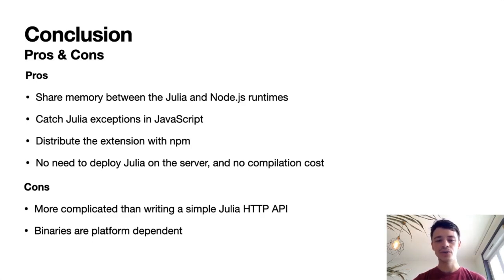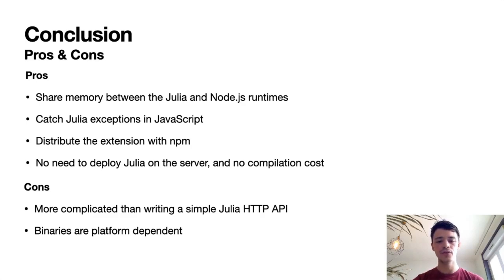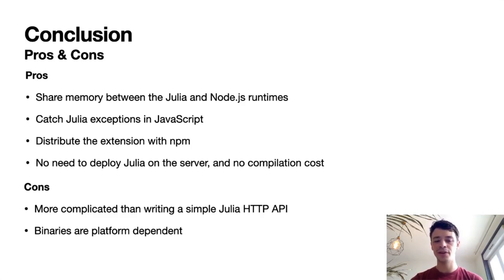The advantages of this approach are: you can share memory between the Julia and Node.js runtimes, which is very efficient when sending large amounts of data; you can catch Julia exceptions in JavaScript, which helps debugging; you can distribute your extension with npm without needing Julia on the server; and there is no compilation cost at runtime. On the other hand, this is more complicated than writing a simple Julia HTTP API, and the binaries are platform-dependent — if you build on macOS it will only work on macOS.